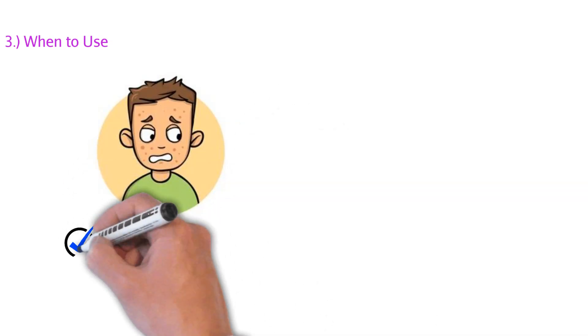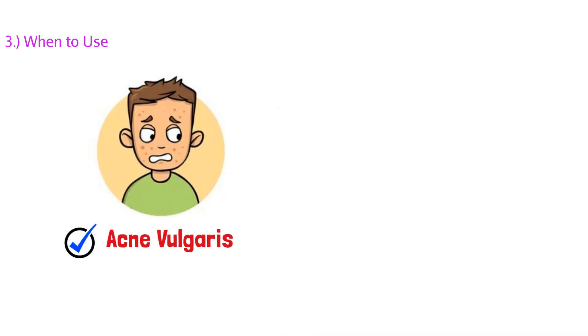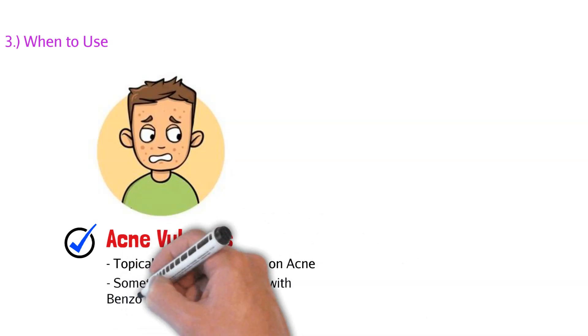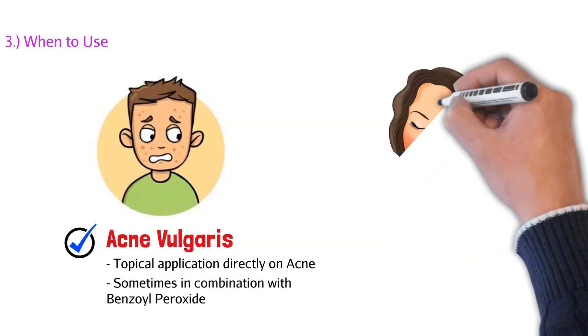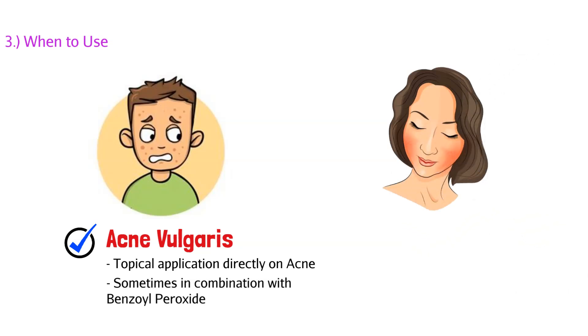So let's talk about when you actually would use Adapalene. The first one, obvious, we've said it multiple times, is for patients that have acne. The medical term is going to be acne vulgaris. And remember, it's a topical product, so we would apply it directly to the face or wherever the acne is developing. Sometimes you'll see Adapalene in a combination product or used in combination with something called benzoyl peroxide. And the benzoyl peroxide is basically a way to eliminate bacteria that's on the face that might be causing the acne. So they would be used together, but not always.